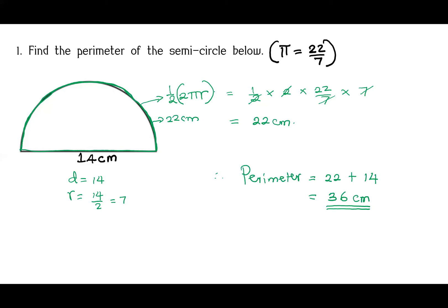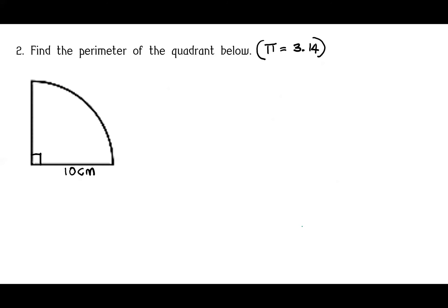I hope you understand that very well. You can see how knowing circumference is very important — if we cannot find circumference, we cannot find the perimeter of this semicircle. Number two: find the perimeter of the quadrant below. This time we use π as 3.14.